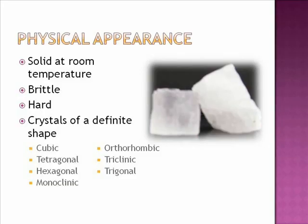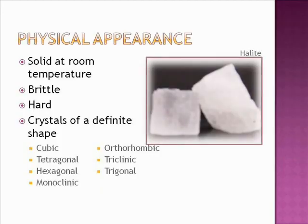An ionic compound that is a prime example of these properties is halite, shown in the picture to the right of the screen. When found in nature, halite, otherwise known as sodium chloride, is a white solid that appears as cubic crystals. When force is applied, halite shatters into small crystals instead of bending or deforming. All of these properties are characteristic of ionic compounds.